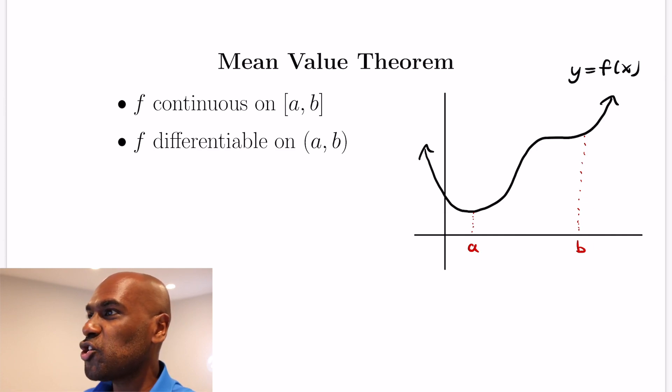So the theorem states that if you have a function f that's continuous on the closed interval [a,b] and is differentiable in the open interval, so it's differentiable in between a and b, then if you look at the slope of the line between the points (a, f(a)) and (b, f(b))...